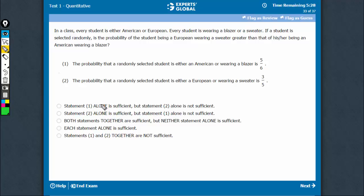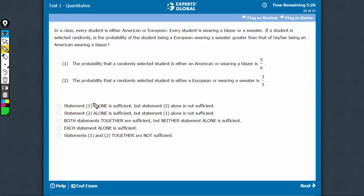In simple words, this question says that European wearing a blazer plus European wearing a sweater plus American wearing a blazer plus American wearing a sweater is the entire pool. So the probability is going to be 1.